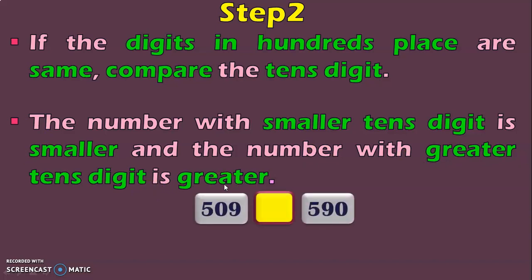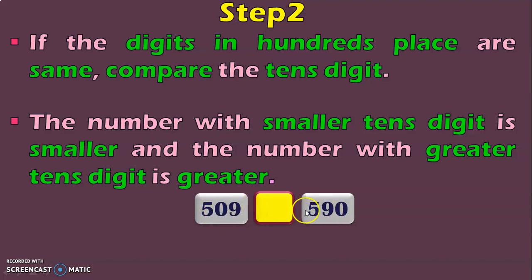Let us see this with an example. Here we have 509 and 590. Look at the hundreds place first — both are 5. So next, move on to the tens place where we have 0 and 9. We know that 0 is lesser than 9, so you can conclude 509 is lesser than 590, and this is the lesser than symbol.